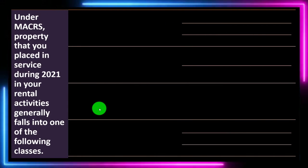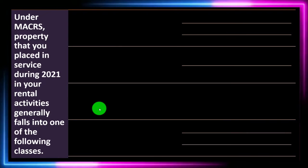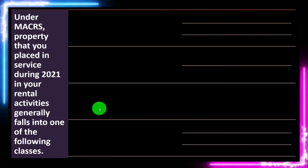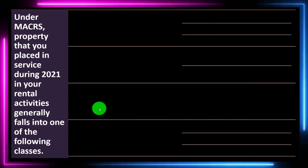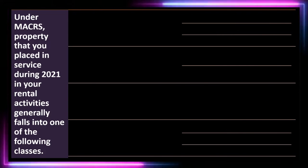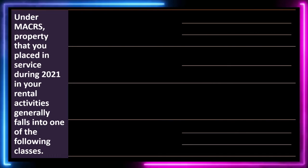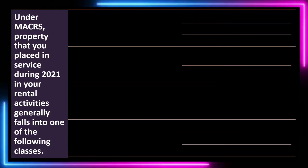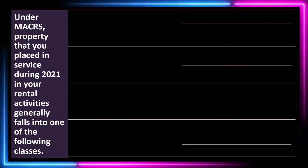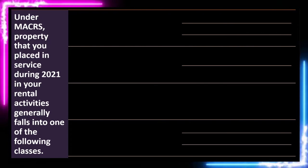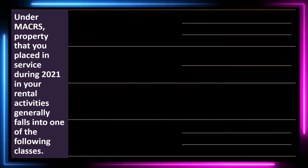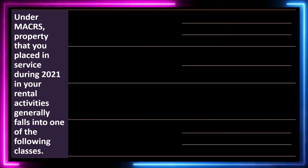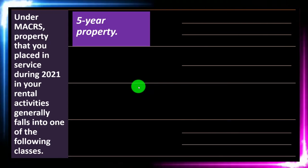Depreciation for taxes includes the MACRS — the Makers Depreciation System. Under MACRS, property that you place in service during 2021 in your rental activity generally falls into one of the following classes. When thinking about depreciation for the tax code, they are very restrictive and defining in terms of what type of property we have and what class it falls into, which determines the depreciation method we're allowed to apply.